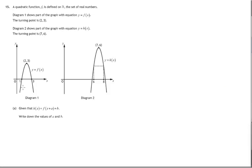In this question we're shown the graph of a quadratic function f of x, y equals f of x, and we've got a related function y equals h of x. The relationship between them is that h of x is f of x plus a plus b, and we're asked to write down the values of a and b. Presumably we can look at these two graphs and figure out what a and b are without much working out.